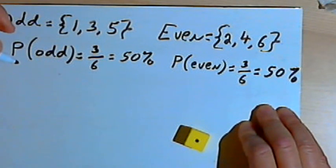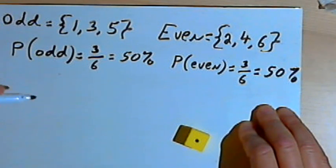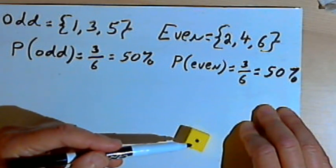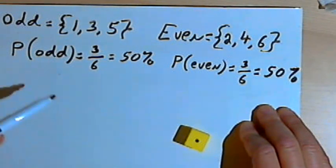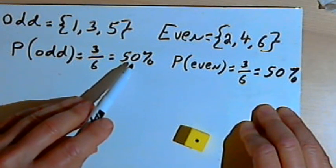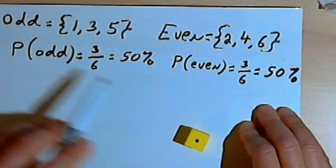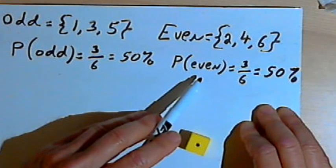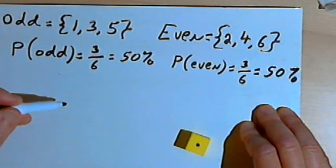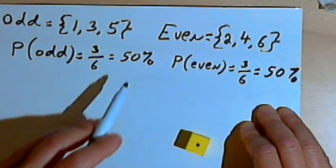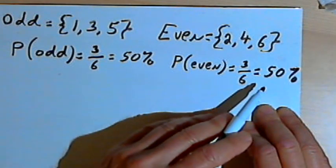And the law of large numbers is going to say that if I do that experiment a lot of times, thousands of times, then I'm going to end up with something very close to a 50 percent probability of getting an odd number, and something very close to a 50 percent probability of getting an even number. This is called the experimental probability, or the empirical probability. The more times I do the experiment, the closer I'll come to the theoretical probabilities.